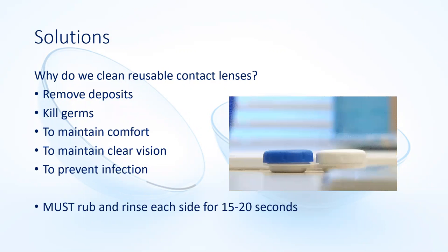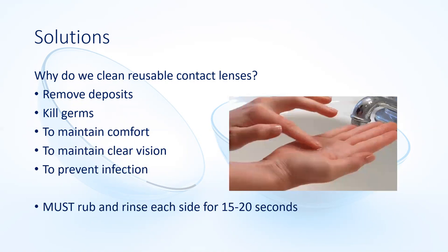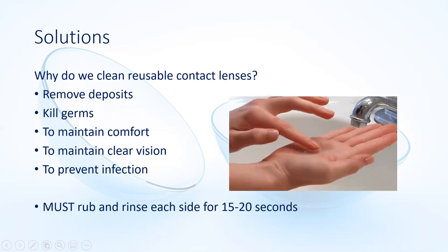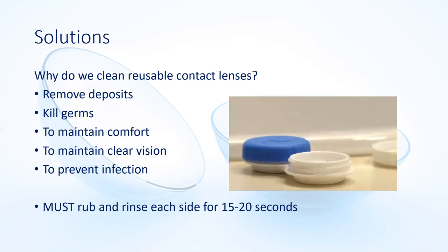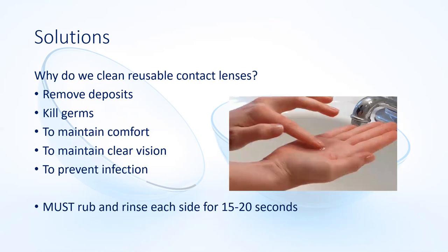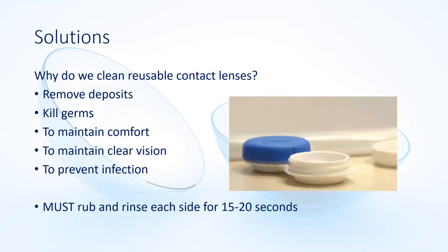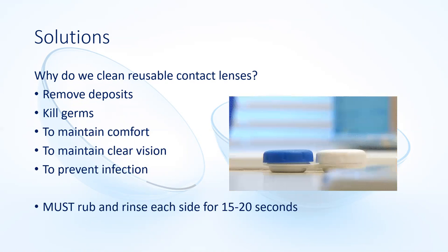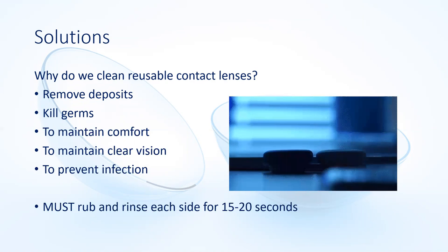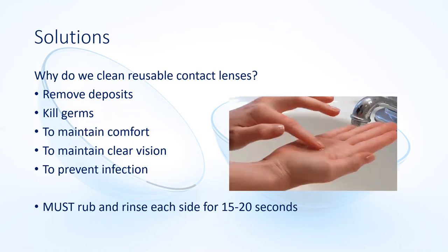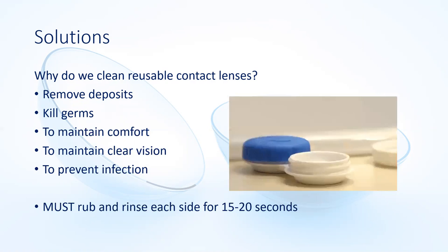With the rub-and-rinse stage, you need to rub each surface of the lens for about 15 to 20 seconds, but most people stop after a few seconds. We want them to do it properly. That friction is what moves the deposits — it's about the mechanical action, like washing up. Just rinsing the lens doesn't do much; the rubbing is what dislodges the deposits.